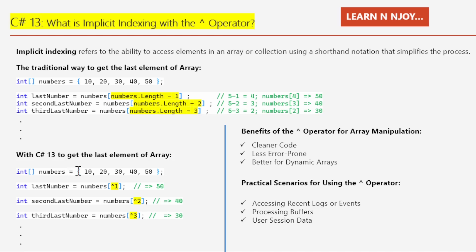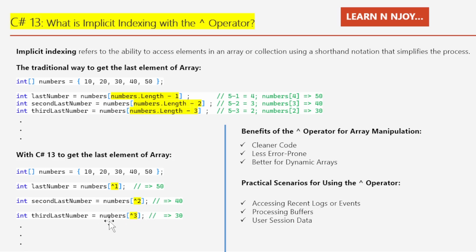With C# 13, we can simplify this with the new caret operator. Again, we have an integer array numbers = {10, 20, 30, 40, 50}. To fetch the last element, we just write numbers[^1]. This caret 1 represents the last element — it gives us 50. For the second last, we write numbers[^2], giving us 40. For the third last, numbers[^3], giving us 30. How easy is that? This makes our code cleaner and more intuitive, especially when working with longer arrays.